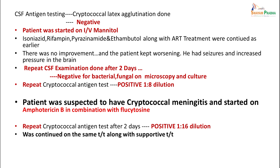The patient was started on IV mannitol, isoniazid, rifampicin, pyrazinamide and ethambutol along with ART treatment. There was no improvement and the patient kept worsening — he had seizures and increased pressure in the brain. Repeat CSF examination after 2 days was again negative for bacterial and fungal organisms on microscopy and culture. However, repeat cryptococcal antigen test came positive at 1:8 dilution. Patient was suspected to have cryptococcal meningitis and was started on amphotericin B in combination with flucytosine. Treatment has to continue for 6 months or more.